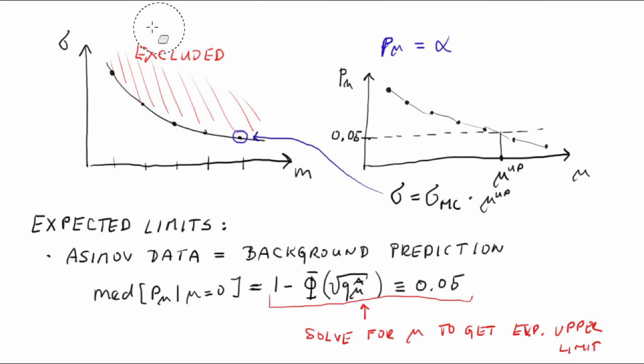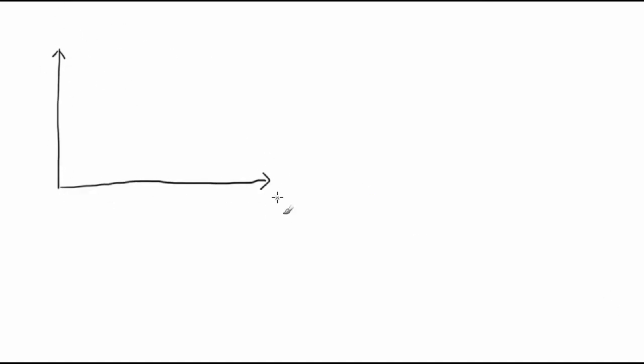When setting limits, we can easily run into a situation in which the null and the alternative hypotheses predict a very similar distribution of the test statistic. Obviously, such a test has a very low power. In an extreme, but not uncommon case, the power can be as low as alpha.